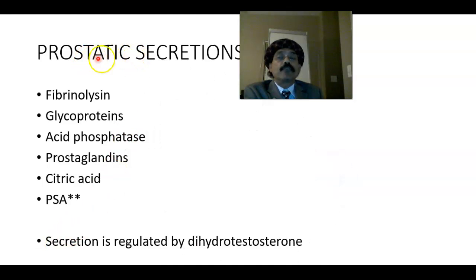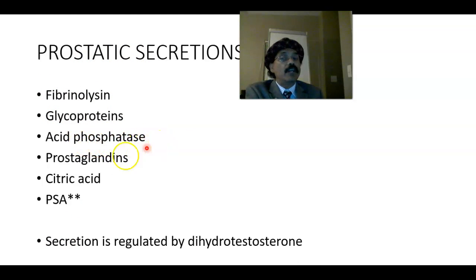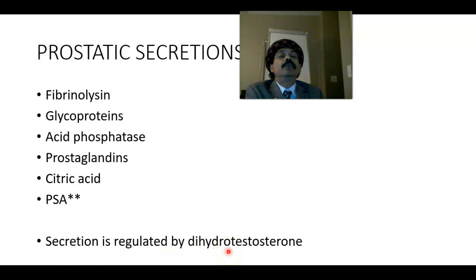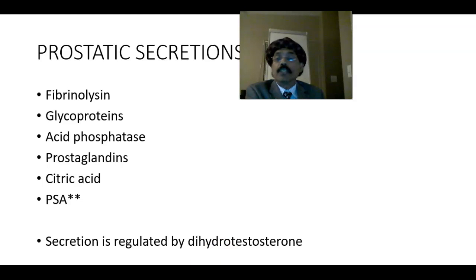Prostatic secretions include fibrinolysin, glycoprotein, acid phosphatase, prostaglandin, citric acid, and PSA — prostatic specific antigen. The secretion is regulated by dihydrotestosterone, so hormonal regulation is an important factor controlling the secretion of the prostate gland.